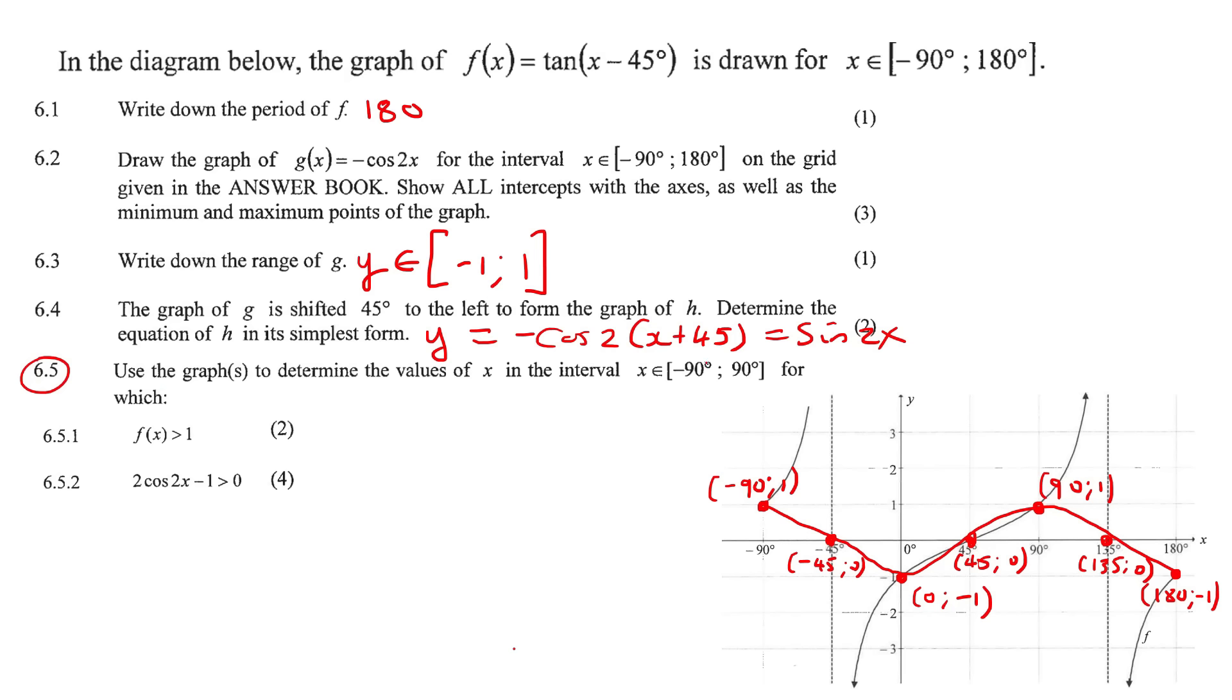Now it says for this question, use the graphs to determine the values of x for which f of x, which is the tan graph. They want to know where is it bigger than 1. So if y is 1, that's this line here. So they want to know where is it above this red line that I've just drawn. So we can see that it's above that red line over here. You always want to stop at the asymptote. So we could say that it is when x is bigger than minus 90 but smaller than this asymptote, which is negative 45. In interval notation, you would say x is an element from minus 90 up to minus 45. Round brackets because they're not including the 1.